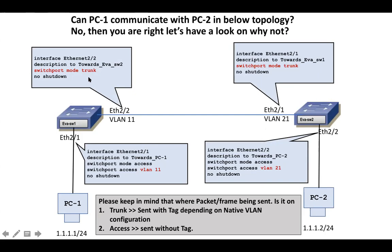This happens because the interlink inserts a tag to inform the remote end that the traffic belongs to VLAN 11. Therefore EVA Switch 2 does not forward the frame towards Ethernet 2/2 which is in VLAN 21, since that port is not part of VLAN 11.